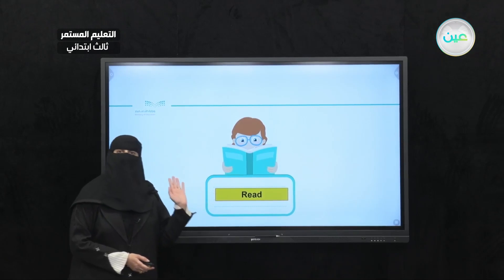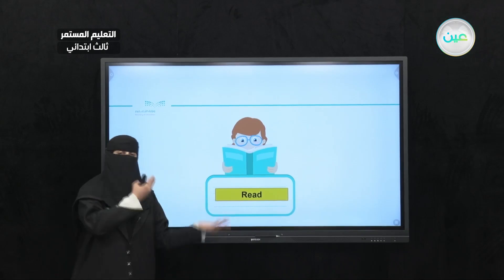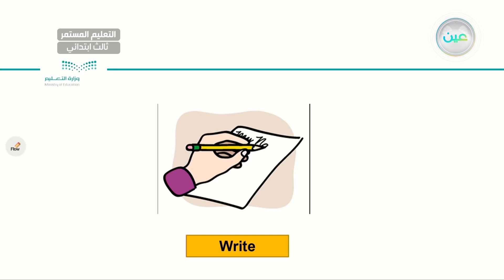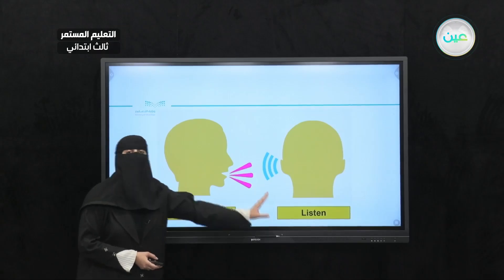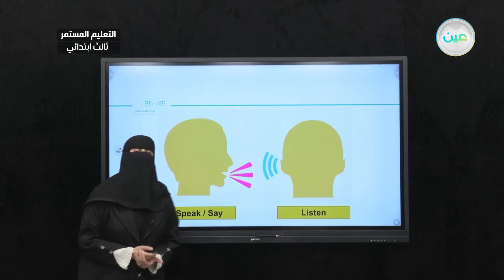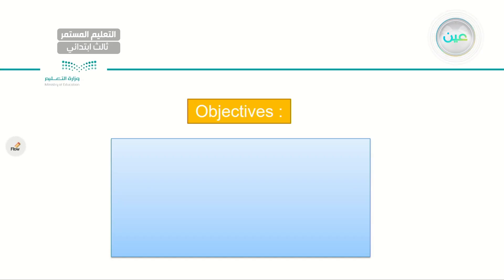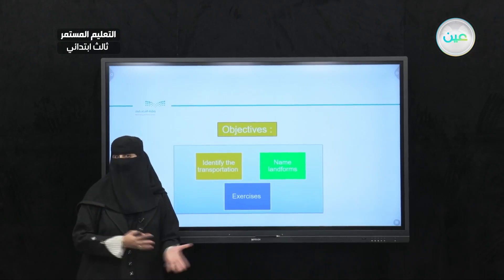What skills do you think we will cover? We will read, so for this part, I need you to have your books ready, right in front of you, and focus on the screen. Also, we will write, so I need you to have your notebook and some pencils in case you need to take some notes. While I'm speaking the words or reading the sentences, I need you to listen carefully and repeat them with me. Make sure you are sitting in a quiet place. By the end of the lesson, insha'Allah, you are expected to identify different kinds of transportation and name different landforms. We will have fun doing a lot of different exercises.